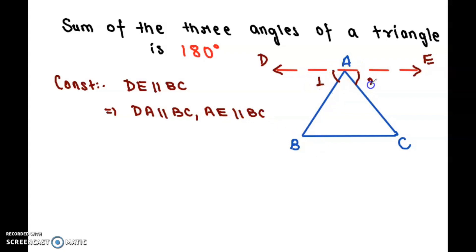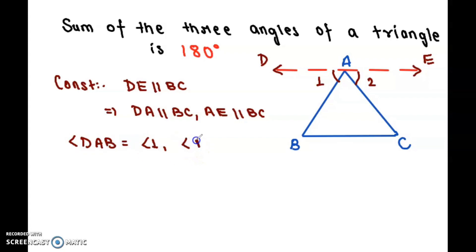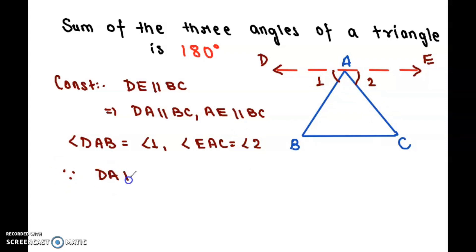Let us name angle DAB as angle 1 and angle EAC as angle 2. We write this so that every time we don't have to write the full name of the angles — it is simpler to denote them by the numbers 1 and 2.